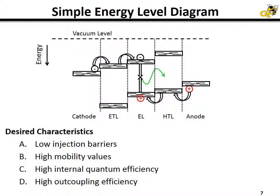From these diagrams, you can get a general feel for why we choose the materials that we do. We generally look for low injection barriers and high mobility values because we want low voltage operation. We want as high an internal quantum efficiency as possible, which is the ratio of internally generated photons to the carriers injected. And finally, we want as high an outcoupling efficiency as possible, which is the ratio of photons extracted from the OLED to the number of photons internally generated. In this way, you get the highest efficiency and lowest voltage operation.